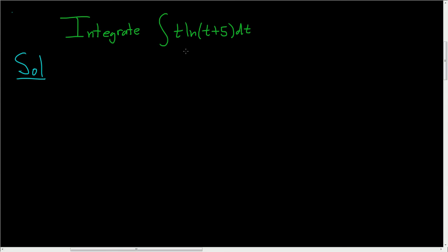So we have to pick u so that it's easy to differentiate. So the obvious choice for that is this. We don't want to integrate the natural log. So u is equal to the natural log of t plus 5. And then so dv is simply what's left over. So this is t dt.